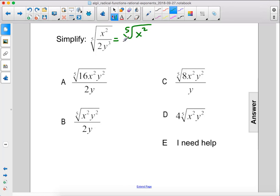We have the fifth root of x squared divided by the fifth root of 2y to the third. This is 2 to the first power and y to the third power.